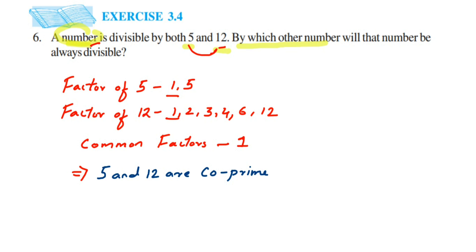So let me repeat once again. Now since 5 and 12 are co-prime numbers, in that case this number will always be divisible by 5 into 12. If you multiply these two numbers, 5 into 12, which is 60.